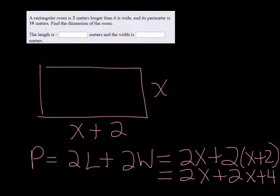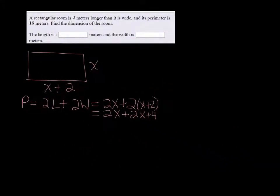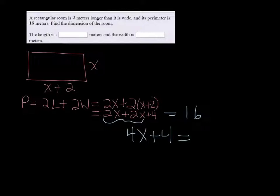And one thing that we know about perimeter is that it's going to equal 16. That's what was given in our problem. When we combine like terms, we get 4x plus 4 equals 16.